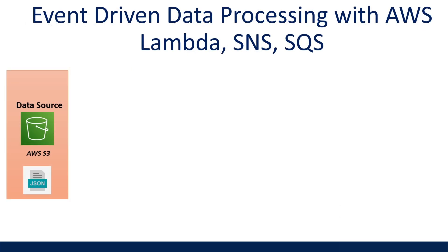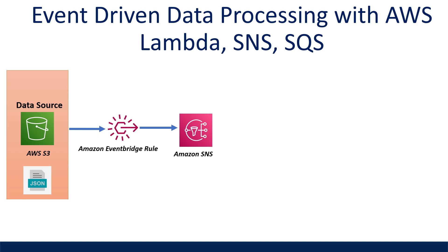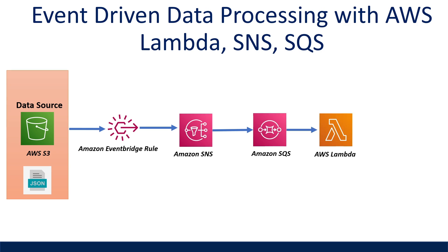The first project idea is building an event-driven data pipeline to handle processing raw files that upload into an AWS S3 bucket. This pattern is used when you have files that arrive on an ad hoc basis and we want to perform some transformation on it before loading it into a data target. To create an event trigger for when a file drops in S3, we can create an Amazon EventBridge rule. Our rule would be connected to an Amazon SNS topic, which would have an Amazon SQS queue attached to our AWS Lambda function.